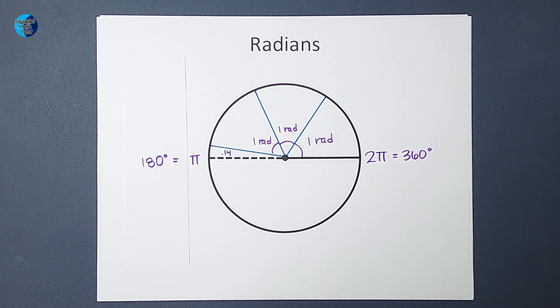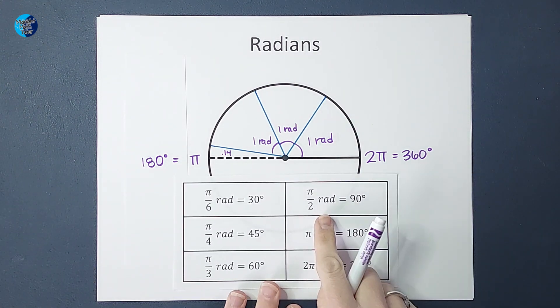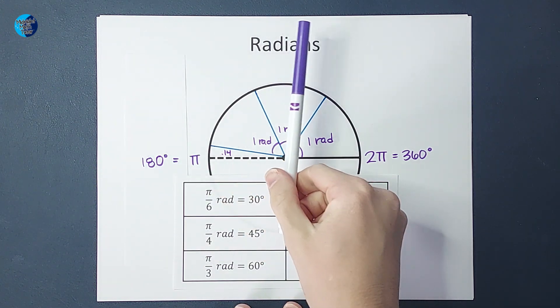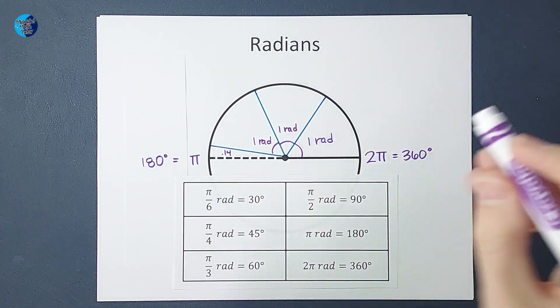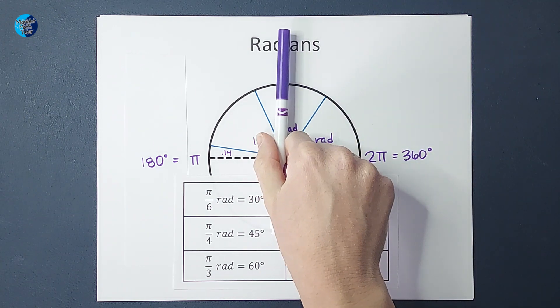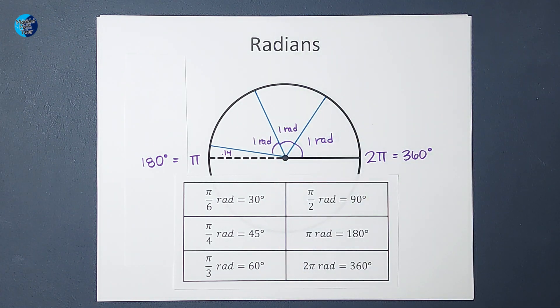So then, it seems pretty logical with these other ones, especially right here. Half of π, so half of the top half of my circle, is equal to 90 degrees. And doesn't that make sense?